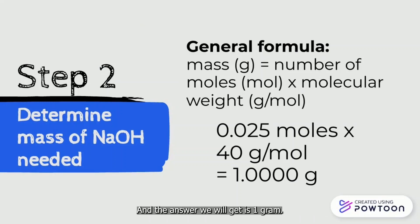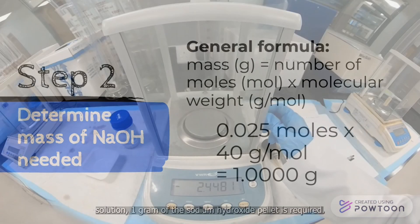And the answer we will get is 1 gram. Hence, to prepare 50 mL of 0.5 molar sodium hydroxide solution, 1 gram of sodium hydroxide powder is required.